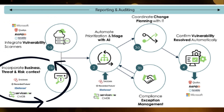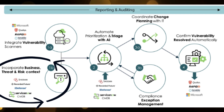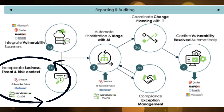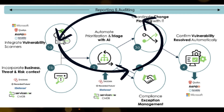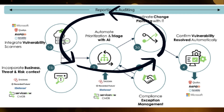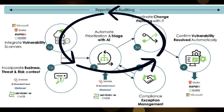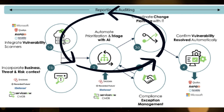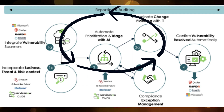On the other side, you also incorporate business and threat risk context, which helps you determine which vulnerability must be remediated first. All of this feeds into ServiceNow's automation, prioritization, and triage with AI — there's also AI capability that was added recently. So you can go ahead and prioritize vulnerabilities and avoid wasting time on low-level vulnerabilities that may not have a huge impact on your organization.